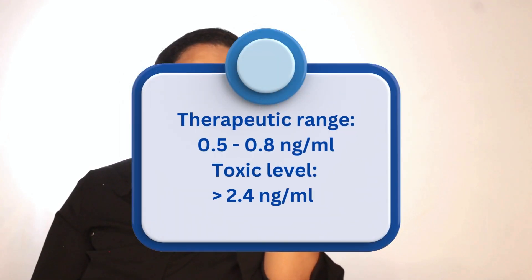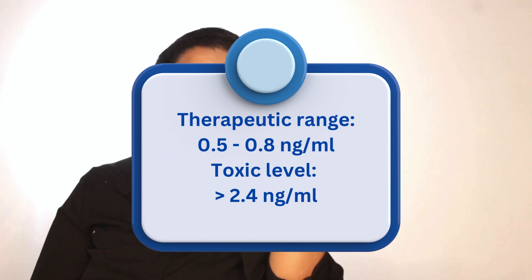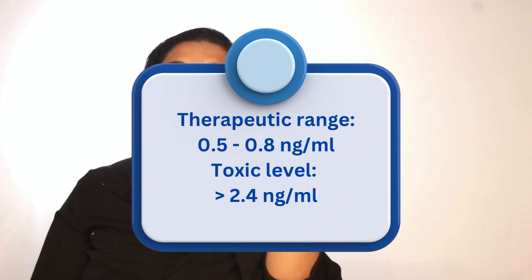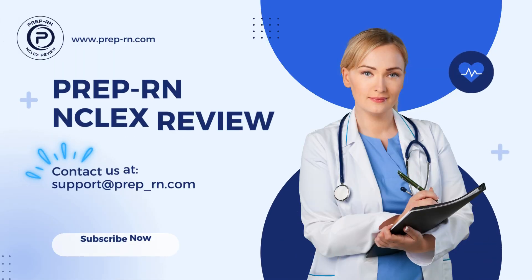Third, help them identify the signs of digoxin toxicity. In addition to clinical presentation, a definitive way to confirm digoxin toxicity is the digoxin level. The therapeutic range for digoxin is 0.5 to 0.8 nanograms per mL, and if it is above 2 nanograms per mL, the patient is in digoxin toxicity. Treatment involves symptom management, antidote therapy, and withholding the drug.